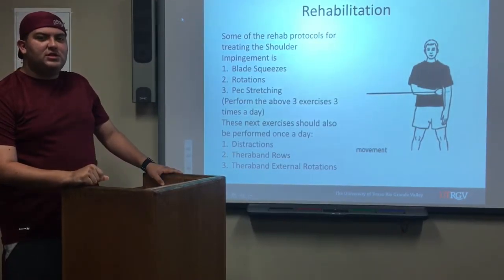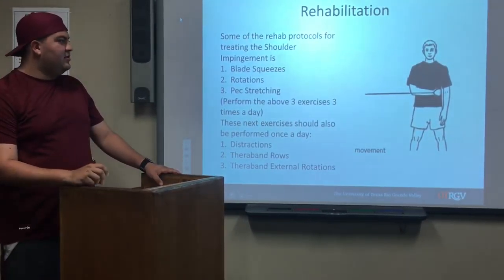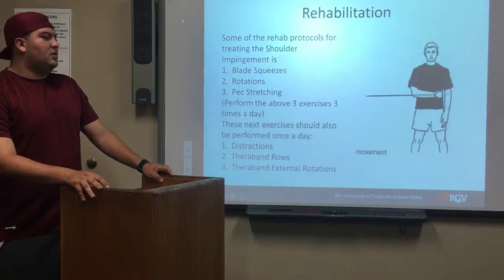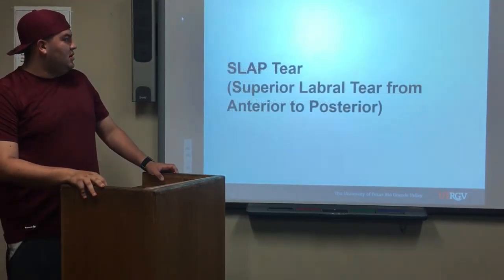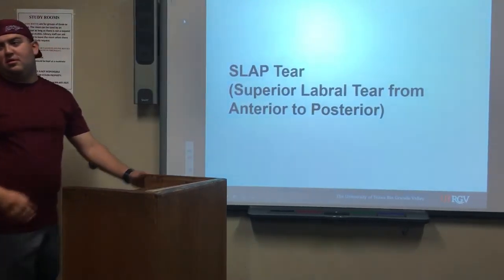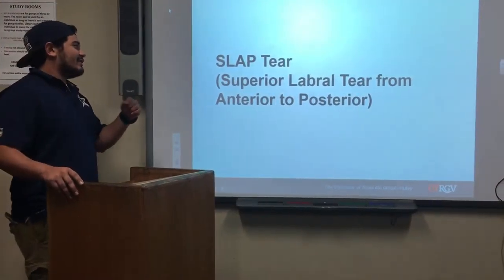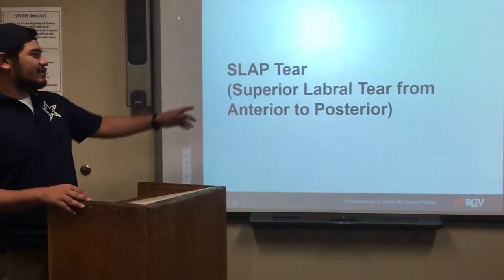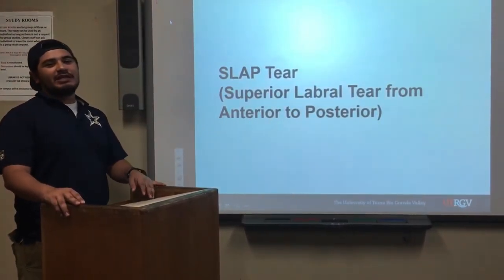The next rehab exercise is pec stretching, which involves grabbing the door frame on the good side and stretching to fully get exposure from the shoulder. Other exercises you can also do use bands to offer some resistance and strengthen the shoulder little by little.